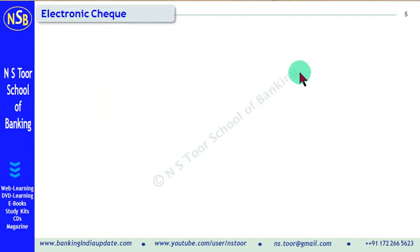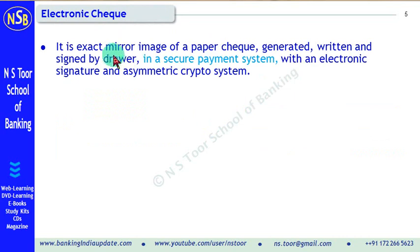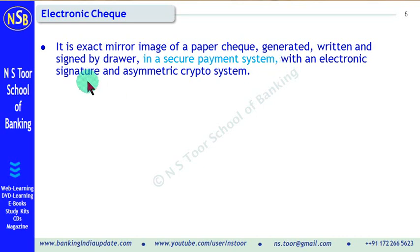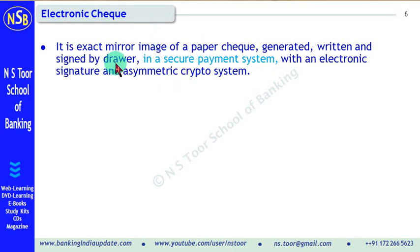What is an electronic check? An electronic check is an exact mirror image of the paper check — a scanned image of a paper check which is generated, written, and signed by the drawer in a secure payment system, with an electronic signature and a symmetric cryptosystem. That is called an electronic check. In simple words, it is a scanned image of a paper check which is authenticated by the electronic signature of the drawer.